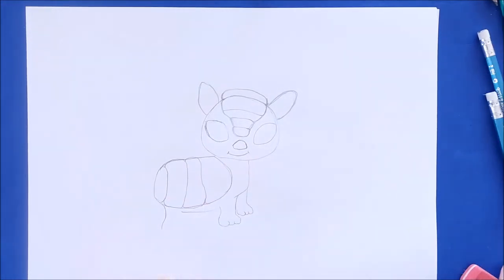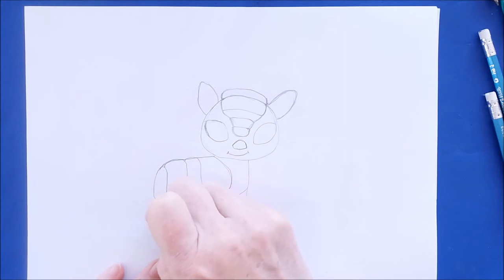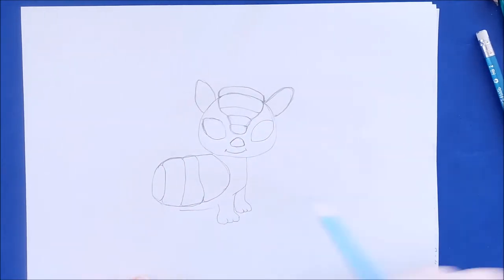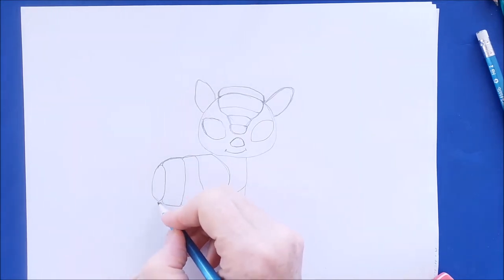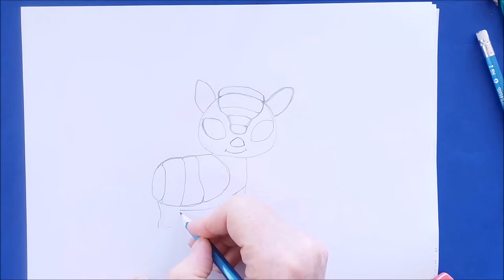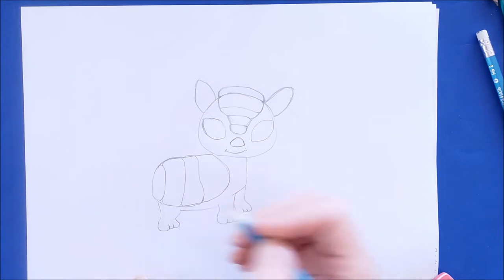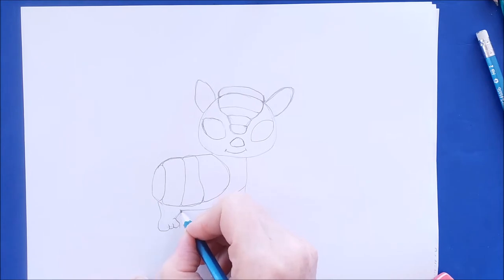And then we'll finish off this back foot the same way we did the front two feet. So it's just a downward line, and another down line, and then those little curves for the toes, three of them. And right here I'm just adding the other hind foot.